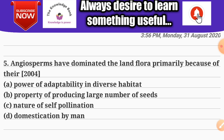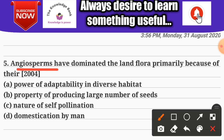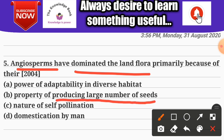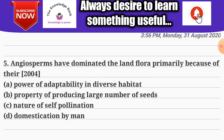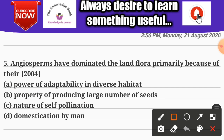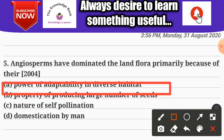Question number five: angiosperms have dominated the land flora primarily because of their — Options: A) power of adaptability in diverse habitats; B) property of producing a large number of seeds; C) nature of self-pollination; D) domestication by man. The correct answer is option A — power of adaptation.